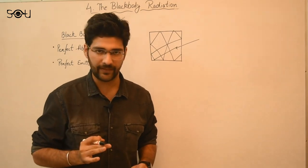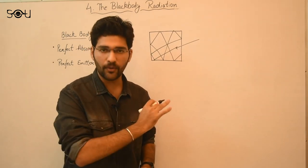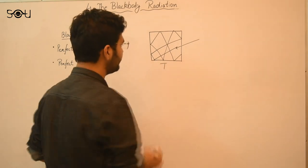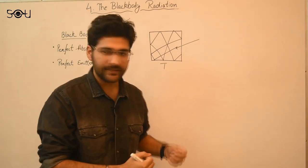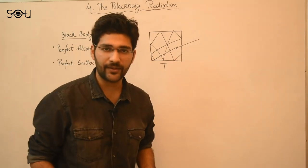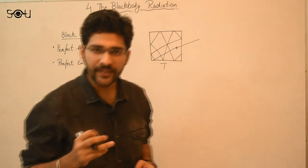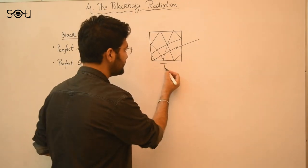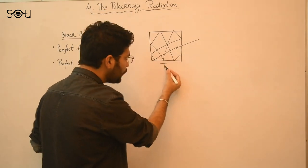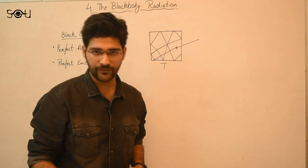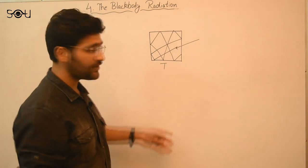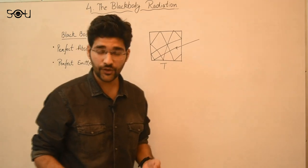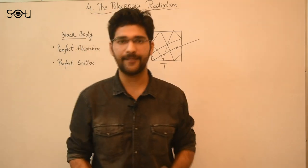Now suppose this body is at a temperature T. Any radiation that comes out through this hole is black body radiation. One particular thing to note about this radiation is that it only depends on the temperature of the box — the temperature of the radiation inside the box. It does not depend on the nature of the material that comprises that box.